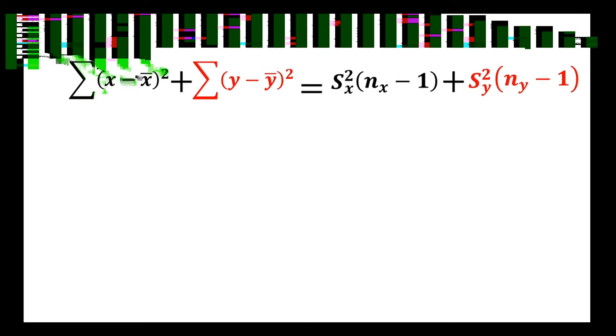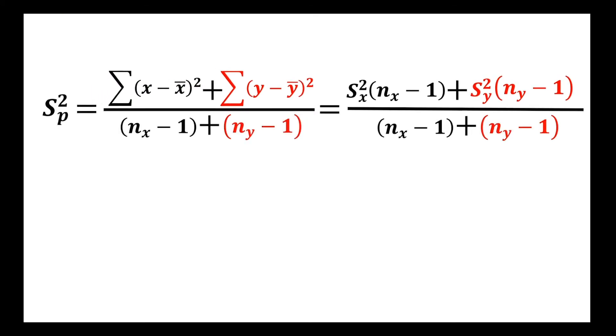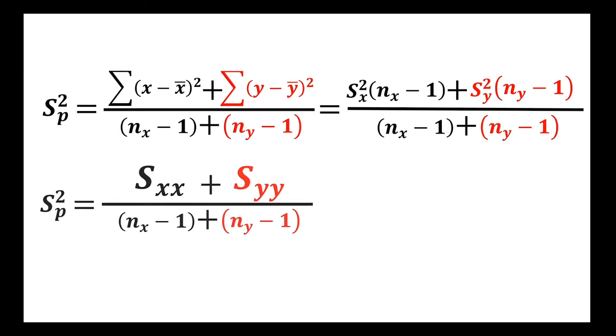This is very much the numerator that we would usually have when estimating the variance. We just need to divide by a sensible n value. Here we're going to divide by n minus one as the standard adjustment, plus n for the second distribution minus one. This is the calculation for our pooled variance.